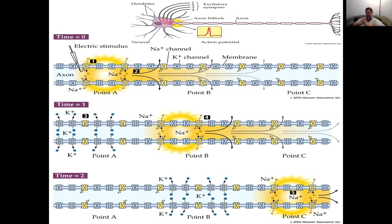This is how the action potential travels down. Notice along this axon we also have these cells called Schwann cells or oligodendrocytes, depending on whether we're talking about the central or peripheral nervous system. In the central nervous system, the myelin sheath is made up of oligodendrocytes; in the peripheral nervous system it's made up of Schwann cells. That myelin sheath is what speeds up the action potential, making the nerve impulse more rapid as it travels down to the axon terminals.